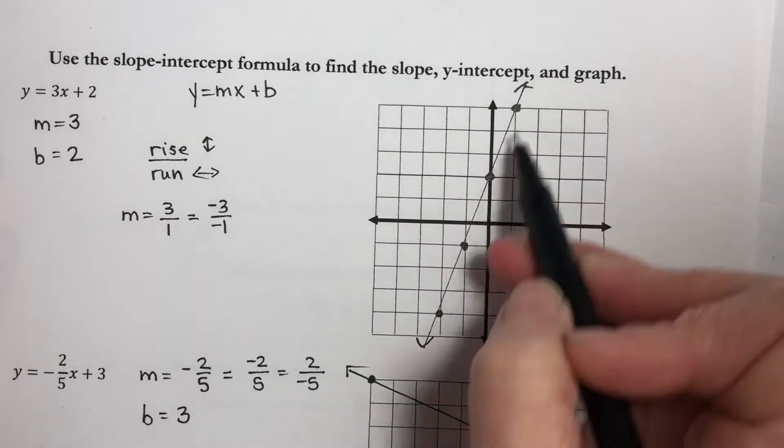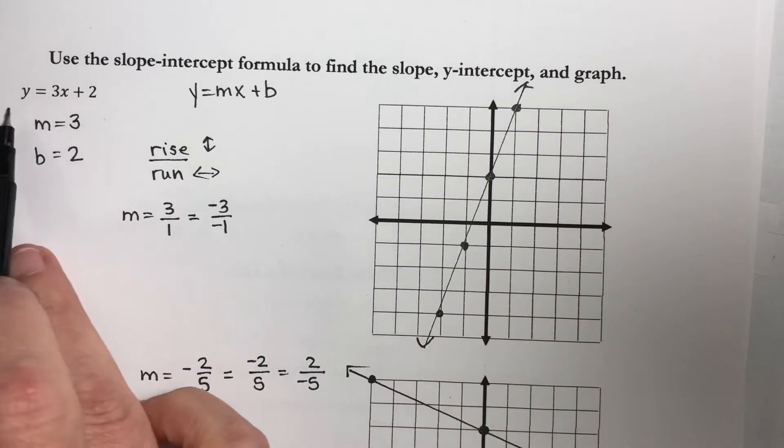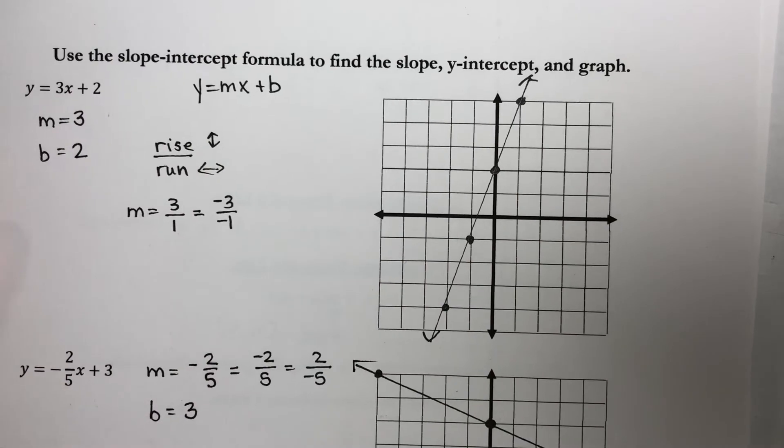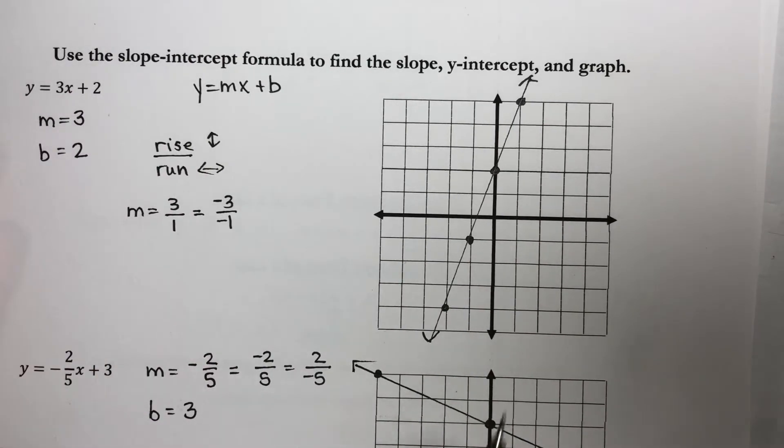This represents every single possible answer combination to this equation right here. So our graphs actually do have meaning.